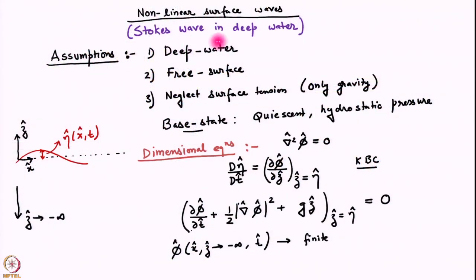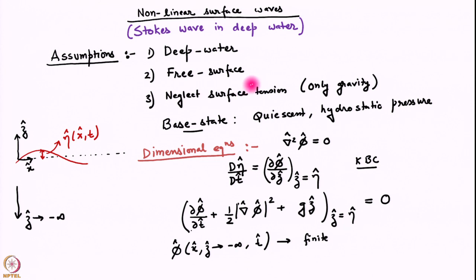Because the algebra tends to be lengthy for this nonlinear wave, we are going to make a number of simplifying assumptions to reduce the length of the algebra. We assume deep water — the pool is infinitely deep in the base state. We have a free surface, meaning we ignore the density of the fluid above; in an air-water situation, we ignore the density of air. We also ignore surface tension and keep only gravity as the restoring force. As usual, the base state is quiescent and the pressure is hydrostatic.